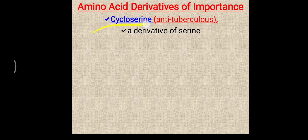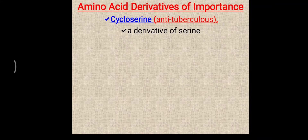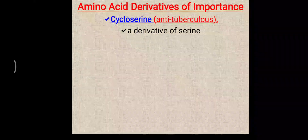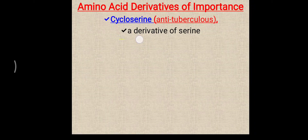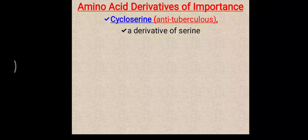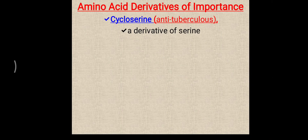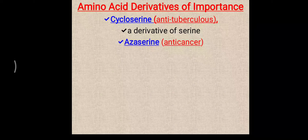The first one is cycloserine, which works as an anti-tubercular drug and is basically a derivative of serine. From the name you can understand that serine is present. So you can remember that cycloserine is derived from serine and works as an anti-tubercular drug.